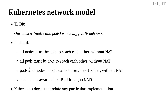In detail, that means all the nodes must be able to reach each other directly, with no NAT in between. The pods also must be able to reach each other, so the containers can ping and connect to each other directly. And the pods and the nodes must also be able to talk to each other directly without NAT, without address translation.